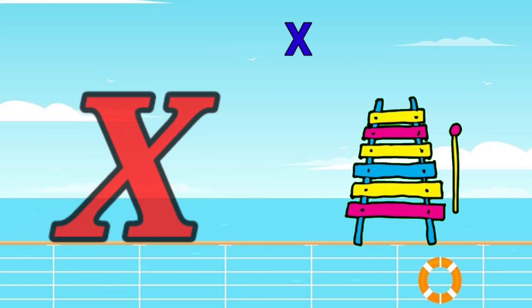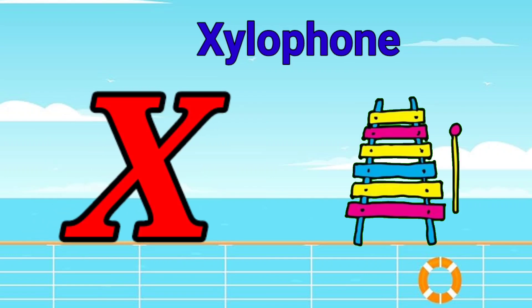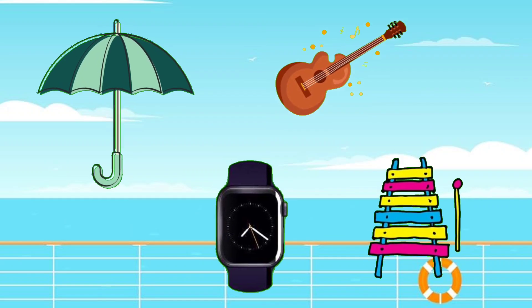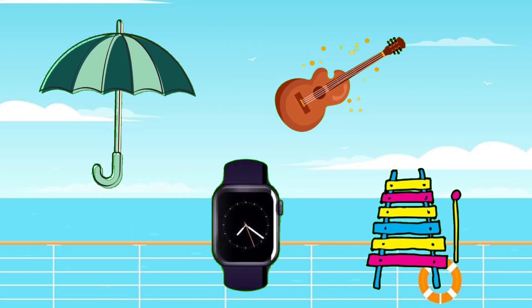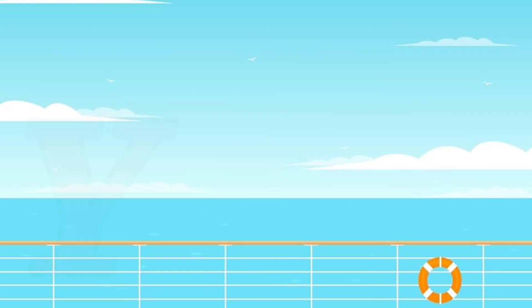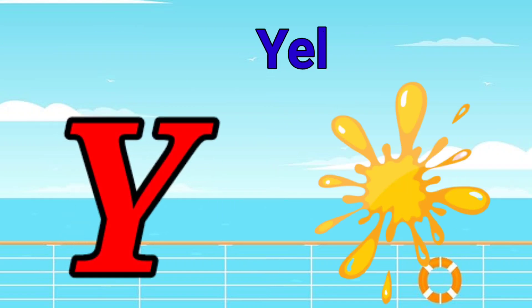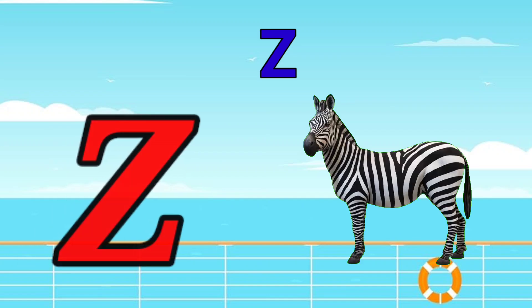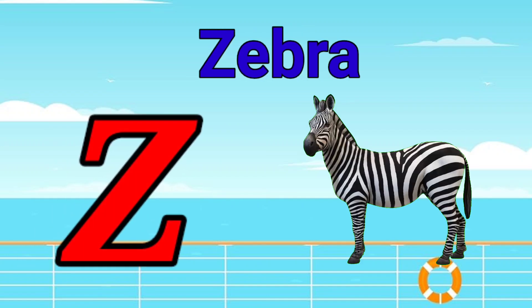X is for xylophone, x-x-xylophone. Y is for yellow, ye-ye-yellow. Z is for zebra, z-z-zebra.